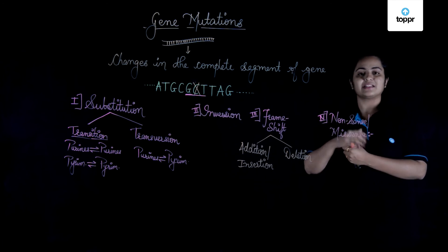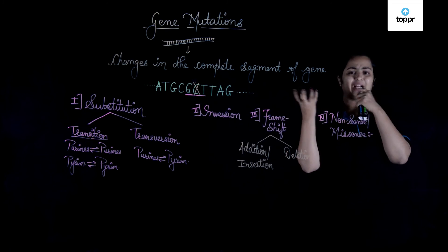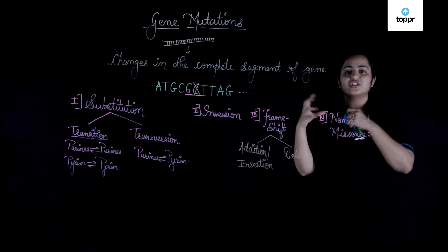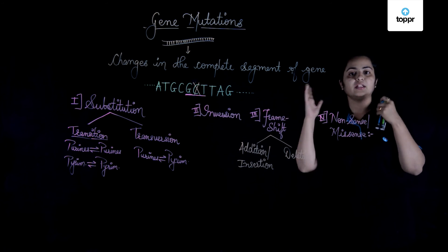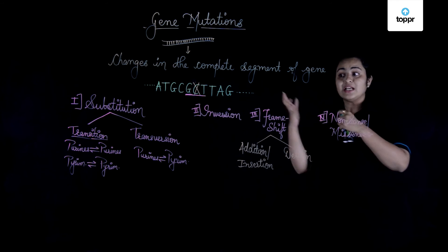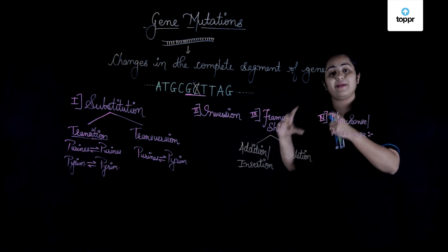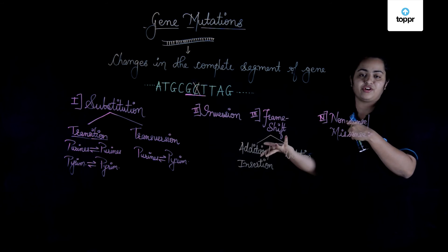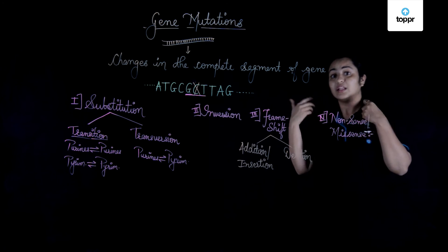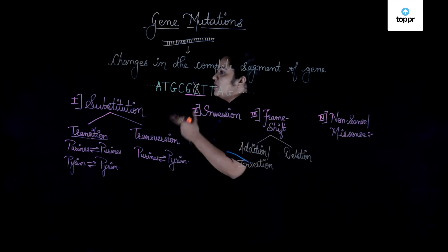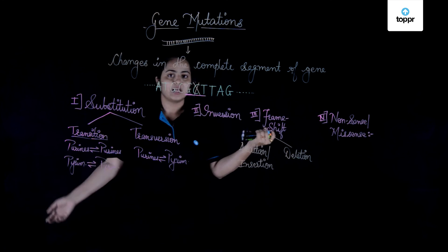Missense mutation is where a codon change results in a codon that is not responsible for producing the correct amino acid. The protein chain either stops prematurely or an amino acid chain is produced in which the resulting protein is non-functional. The protein has no function, giving rise to something we don't desire — a protein that cannot do its job.